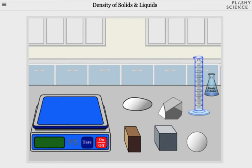Welcome to the video guide of the flashy science density of solids and liquids experiment. On the screen you'll see a mass balance and five solid samples: a cube, a cuboid, a sphere, a pebble shape, and a prism. There's also a measuring cylinder and a flask for emptying the cylinder. To find the density of any solid or liquid, we need to know its mass and volume.